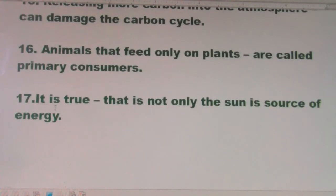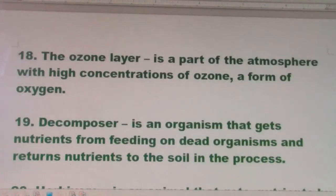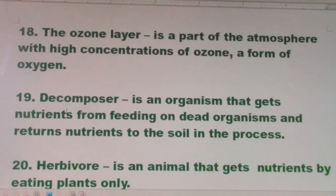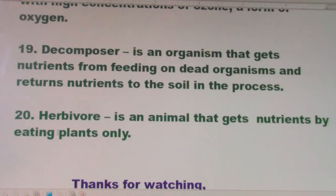Number seventeen: it is true that the Sun is not the only source of energy. Number eighteen: the ozone layer is a part of the atmosphere with high concentrations of ozone, a form of oxygen. Number nineteen: a decomposer is an organism that gets nutrients from feeding on dead organisms and returns nutrients to the soil. Number twenty: a herbivore is an animal that gets nutrients by eating plants only.